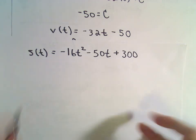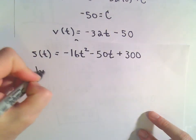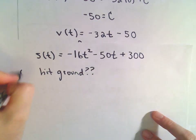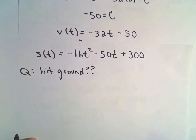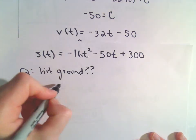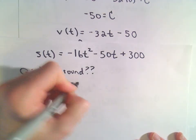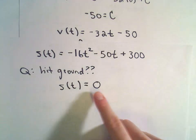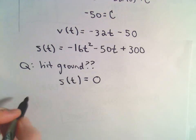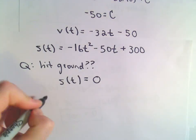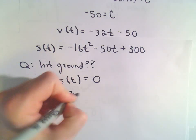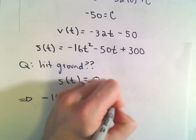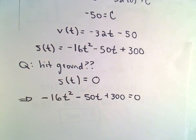Now we want to know when the penny hits the ground. When it hits the ground, the height above the ground S(t) equals zero — it's zero feet above the ground. So we need to solve the quadratic equation: -16t² - 50t + 300 = 0.